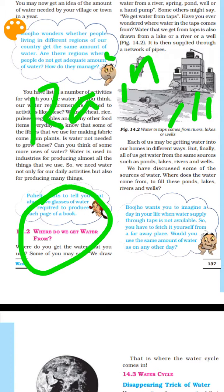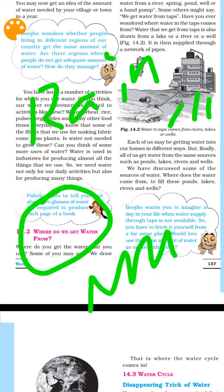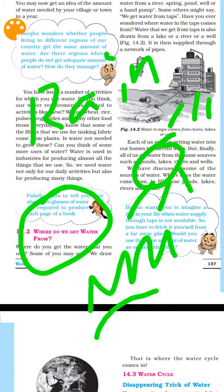We also have ice glaciers. Ice glaciers are found in the Himalayas. When the ice melts, the water flows into rivers. These include the Indus River, the Ganga River, and the Brahmaputra River — all in North India.